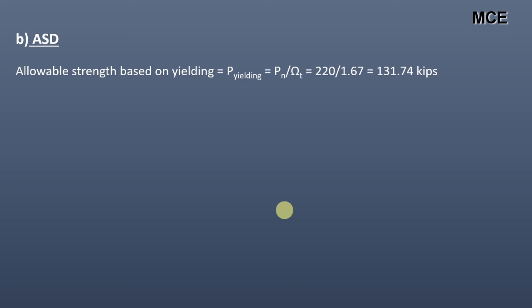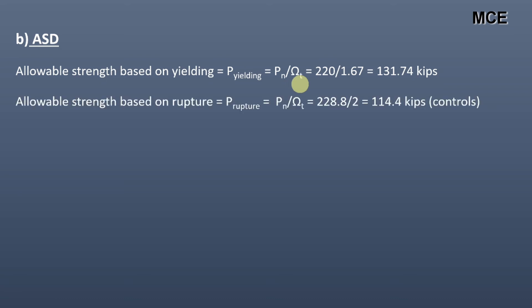For ASD, the allowable strength in yielding equals the nominal yielding strength divided by the safety factor in yielding, which is 220 divided by 1.67, giving 131.74 kips. Similarly, the allowable strength based on rupture equals the nominal rupture strength divided by the safety factor in rupture, which is 228.8 divided by 2.00, giving 114.4 kips.